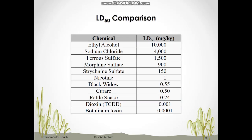This table shows how LD50 can be used to compare between substances. For instance, the LD50 for ethyl alcohol is 10,000 mg per kilogram of body weight — meaning 10,000 mg kills 50% of a specific population. But only 1 mg per kilogram of nicotine can kill 50% of the population. Dioxin and botulinum are even more toxic — only a very small fraction is needed to kill 50% of the population. As you move down the table, the chemicals become progressively more toxic.